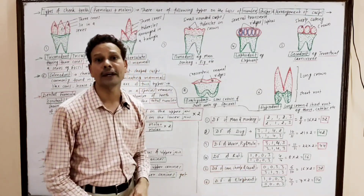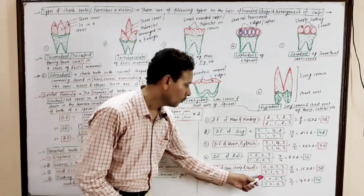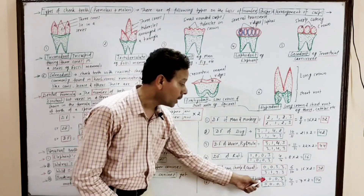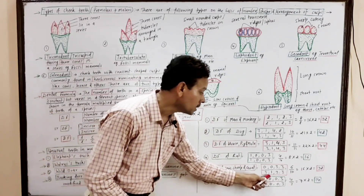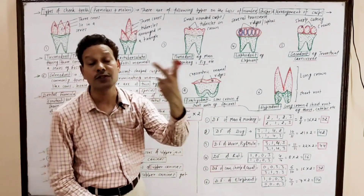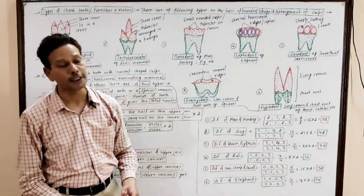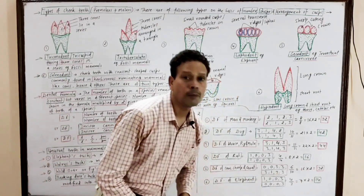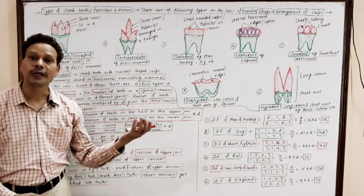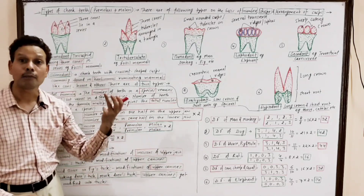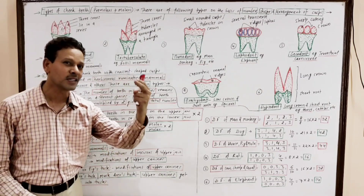The dental formula of elephant is also very important: upper jaw I 1, C 0, PM 0, M 3; lower jaw I 0, C 0, PM 0, M 3. A gap is present in the lower jaw — that is the diastema. The total number of teeth in the elephant is 14.